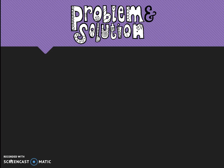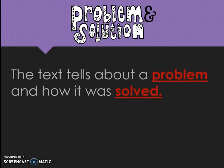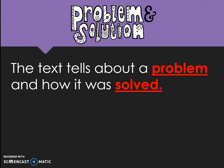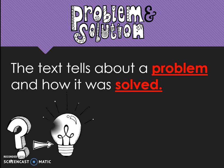The fourth text structure is problem and solution. This is when the text tells about a problem and how it was solved. Our visual reminder is this question leading to a light bulb. The question represents the problem, and the light bulb represents the solution.